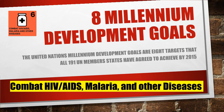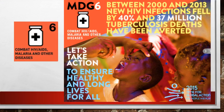MDG6: Combat HIV/AIDS, malaria, and other diseases. Between 2000 and 2013, new HIV infections fell by 40% and 37 million tuberculosis deaths have been averted. Let us act to ensure healthy and long lives for all.